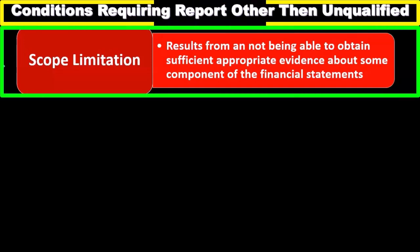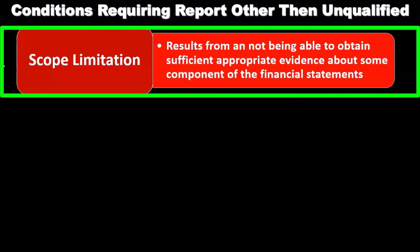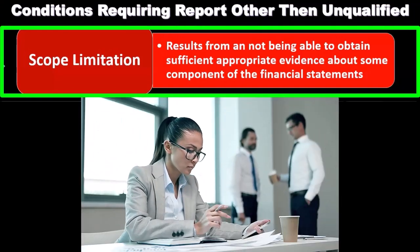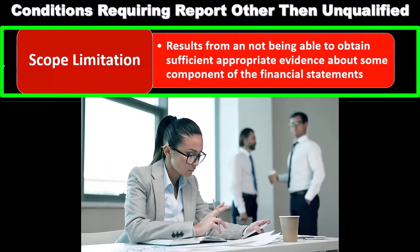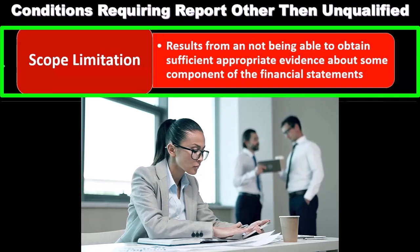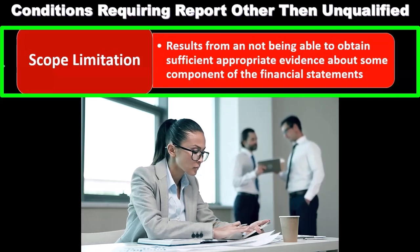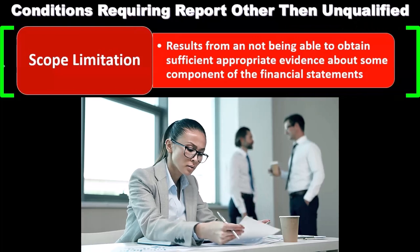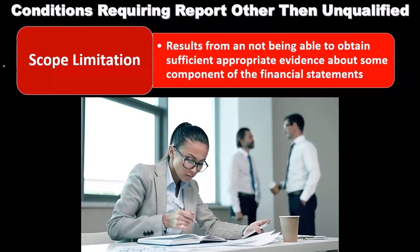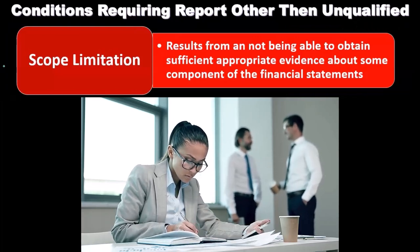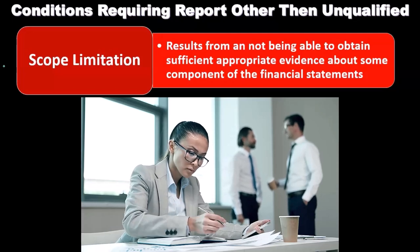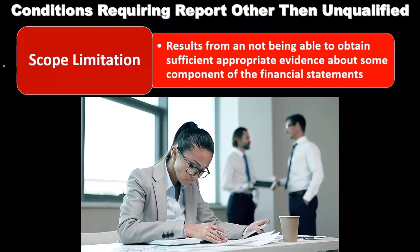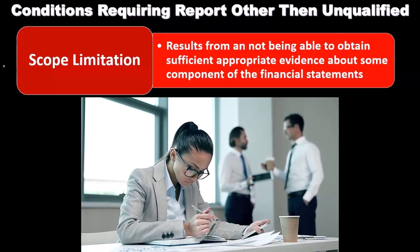A scope limitation, you'll recall, is one of those types of conditions that may cause us to issue a report other than an unqualified standard report. It results from not being able to obtain sufficient appropriate evidence about some component of the financial statements. So there's a scope limitation — we can't get the information on some significant component. For example, let's say they have some part of their organization that's in another country and we can't access it.